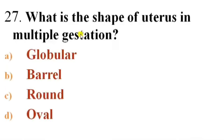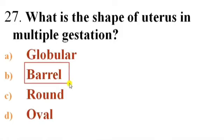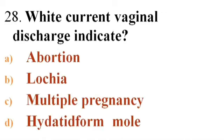Next question: What is the shape of uterus in multiple gestation? Options: A) Globular, B) Barrel, C) Round, D) Oval. Answer is B — Barrel. The barrel shape is the shape of the uterus in multiple gestation.